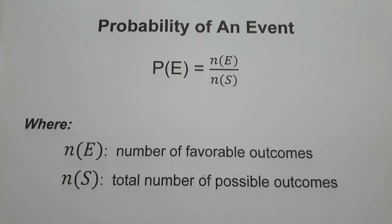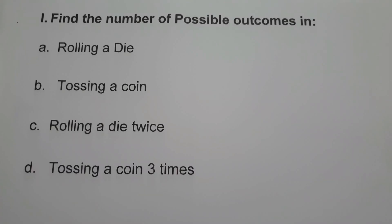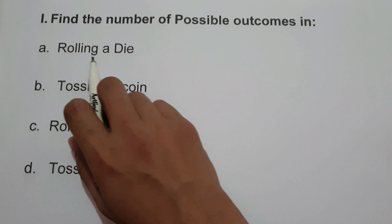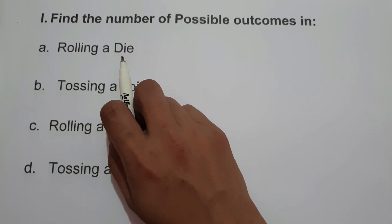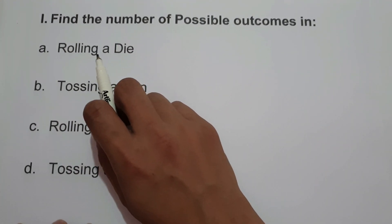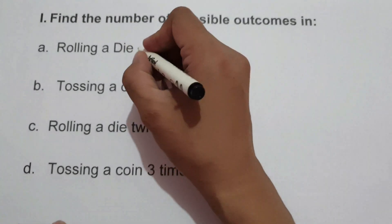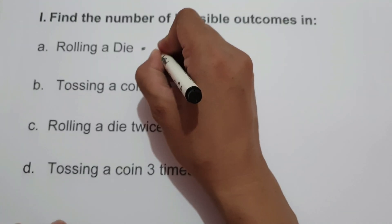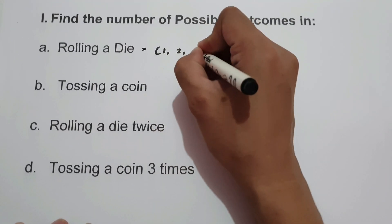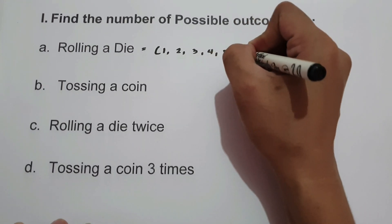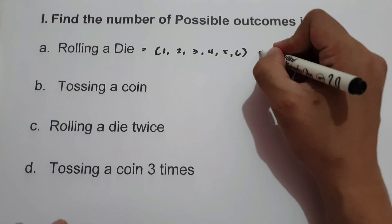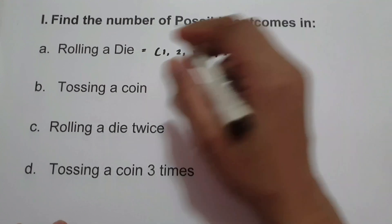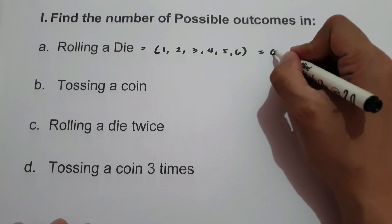Let's start and have an example. On the first set of examples, we are going to find the total number of possible outcomes. On letter A, we have rolling a die. The possible outcomes are 1, 2, 3, 4, 5, and 6. So the total number of possible outcomes whenever we roll a die is 6.